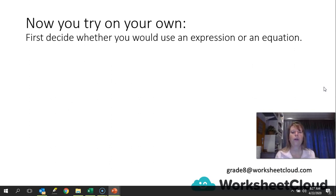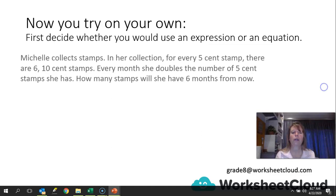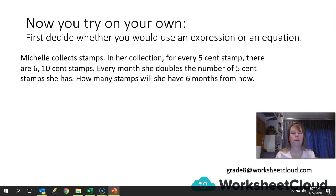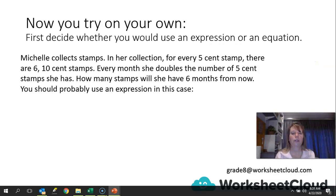Now let's try one on your own. First, decide whether this would need an expression or an equation. Here's your problem — try and work it out on your own on a piece of paper, so pause the video now and then we will go over it together. Michelle collects stamps. For every 5 cent stamp, there are 6 ten cent stamps. Every month she doubles the number of 5 cent stamps she has, and the 10 cent stamps increase by the same proportion. How many stamps will she have 6 months from now?